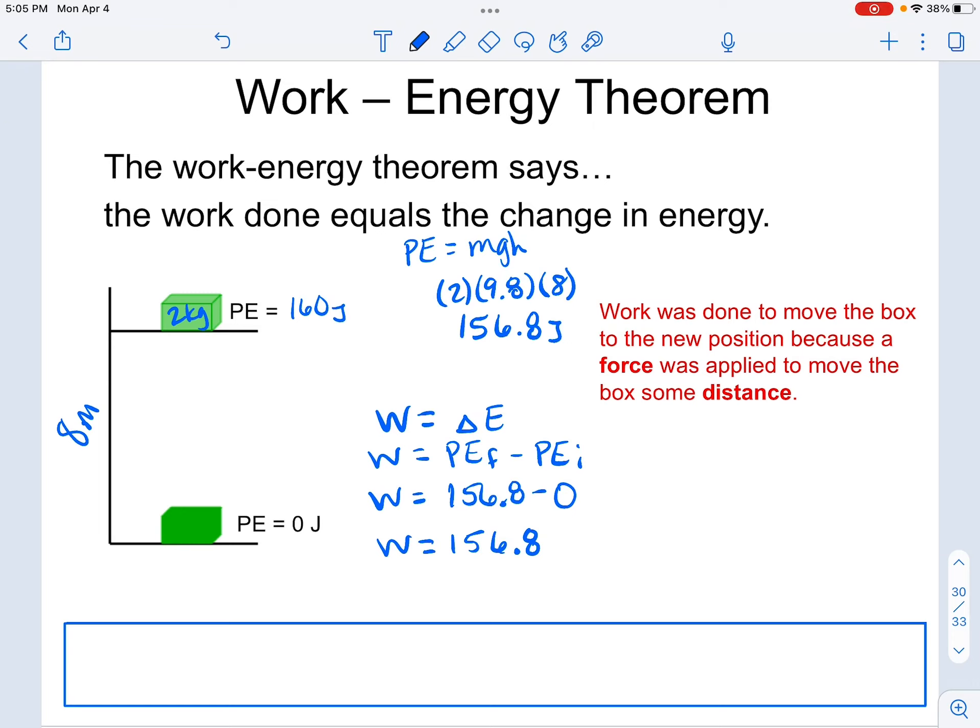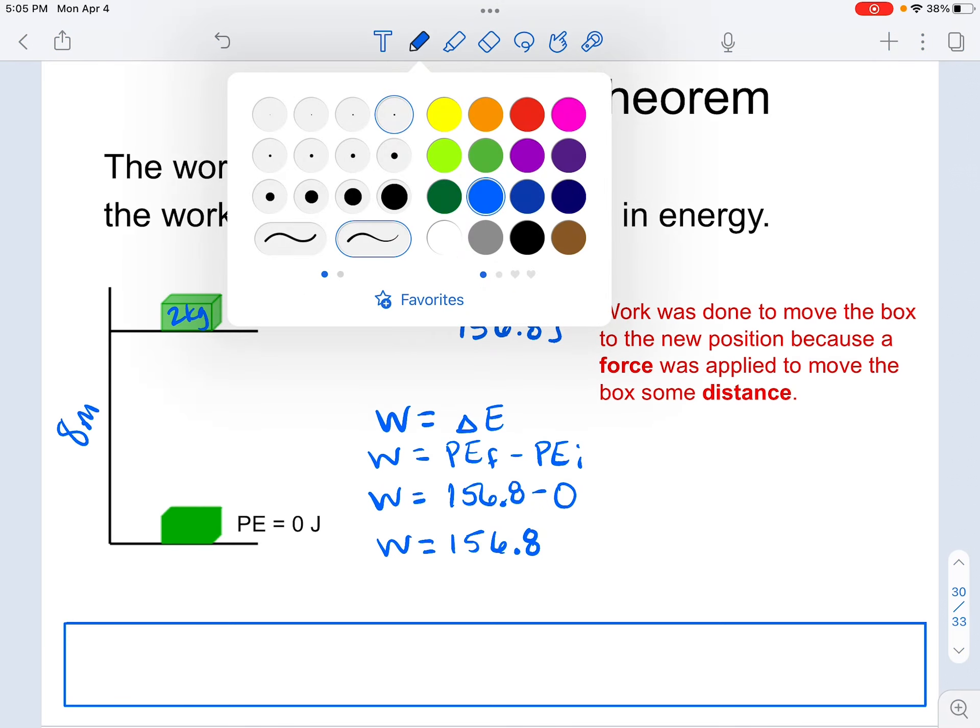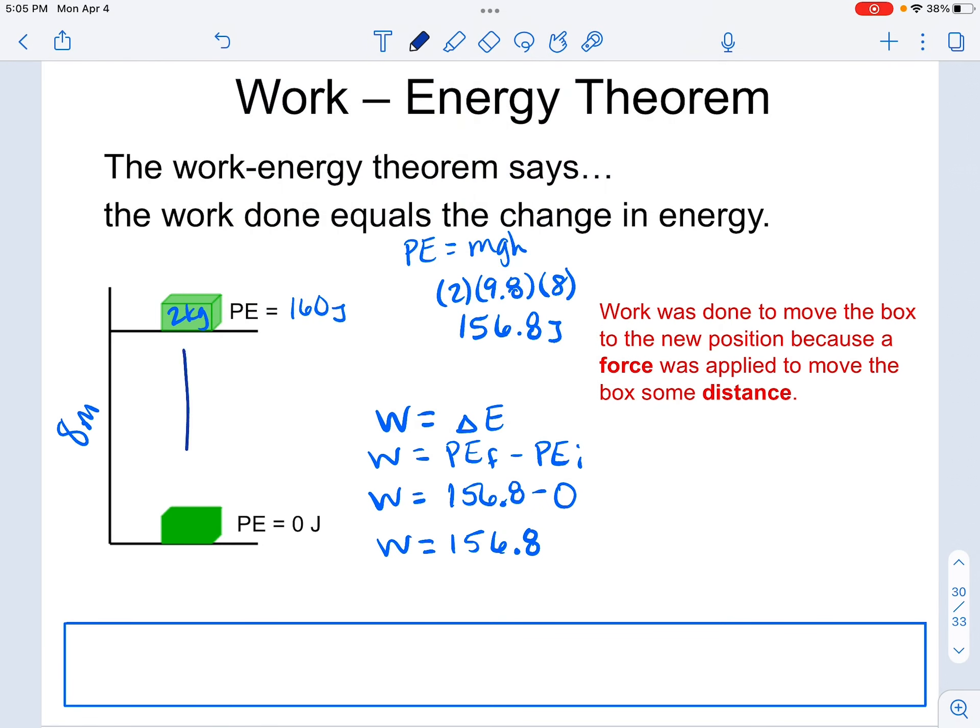Now, if the question said that I started on the shelf and then I moved the box so that it was now on the floor, this work would be, once again, final minus initial, where this would be a final potential energy of 0 minus the initial potential energy. So that would be negative work because the box decreased in energy value.